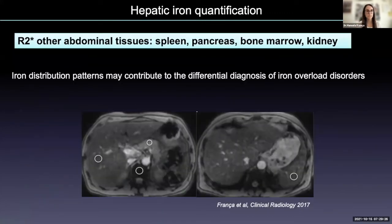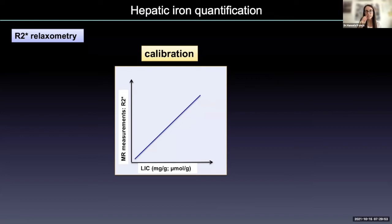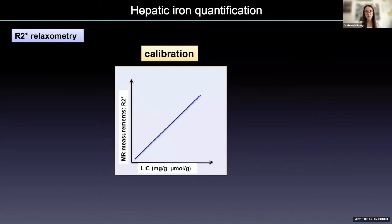We can also use relaxometry to measure R2* in other abdominal tissues, which may help in the differential diagnosis of different iron overload disorders. However, we must keep in mind that with MR, we are not measuring iron directly as we do with fat quantification. Instead, we measure the effect of iron on neighboring protons. So every MR technique must have some kind of calibration to convert the MR measurements into liver iron concentration units obtained from liver biopsies.